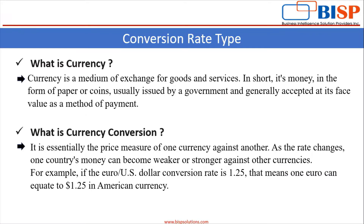The conversion rate is 1.25. It means 1 Euro can equate to 1.25 dollars in American currency.